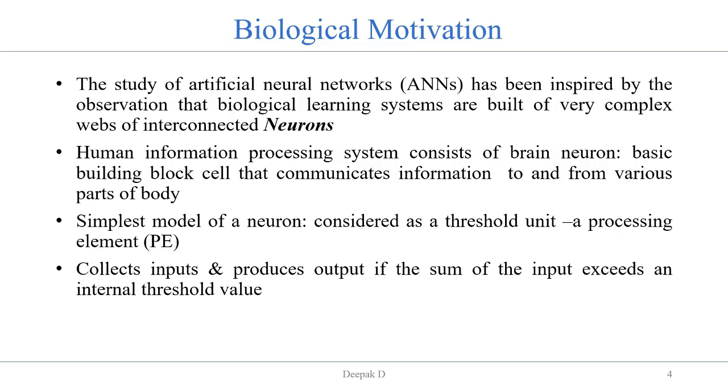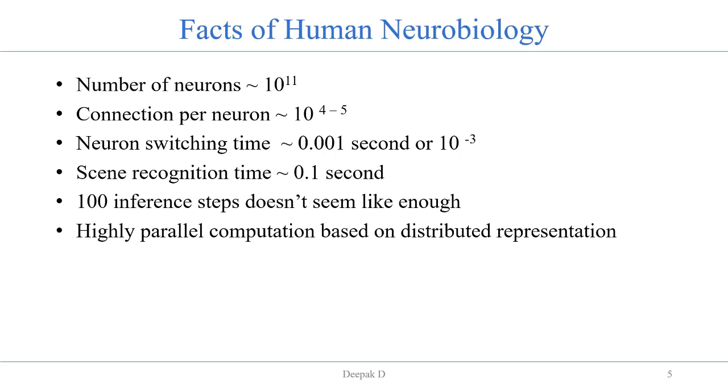Let's see some facts of our human neurobiology. In the human brain there are approximately 10 to the power 11 neurons, and for each neuron there is a connection of 10 to the power 4 to 5. Neuron switching time is approximately 0.001 seconds and the scene recognition time is approximately 0.1 seconds. A hundred inference steps doesn't seem like enough, and it is highly parallel computation based on distributed representation.